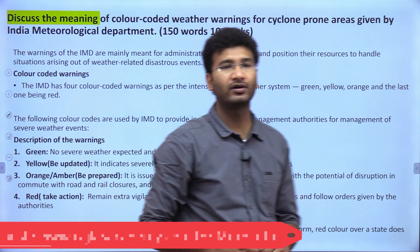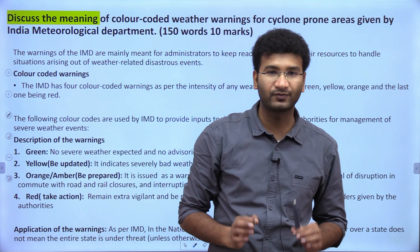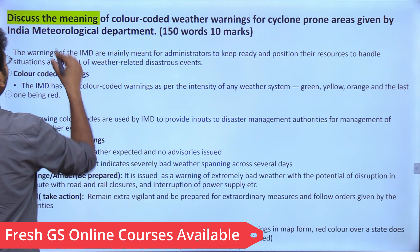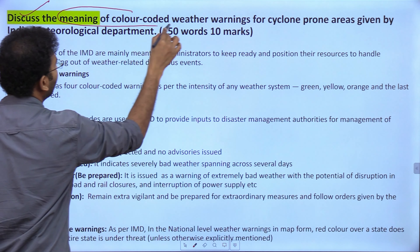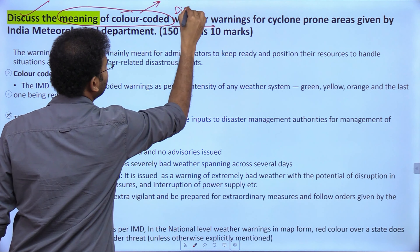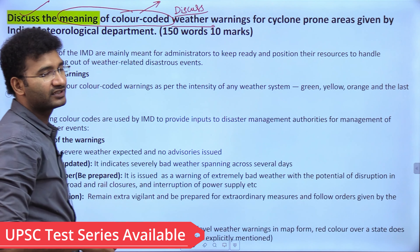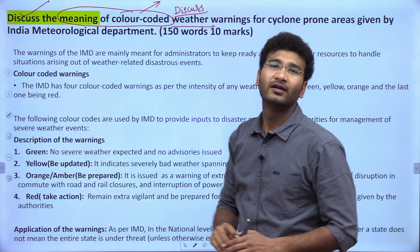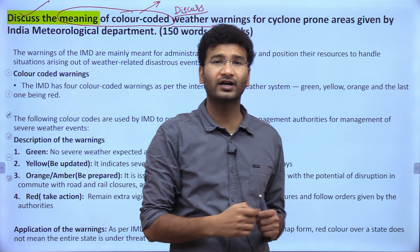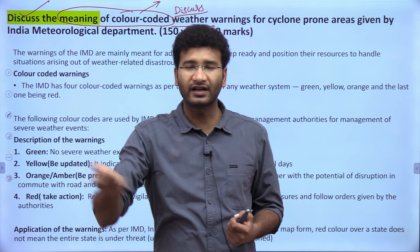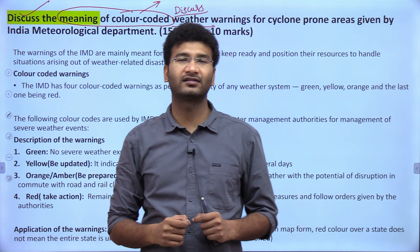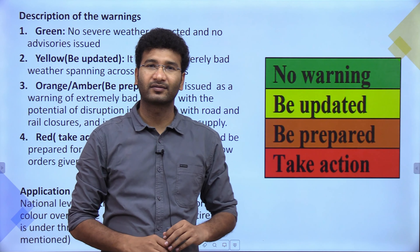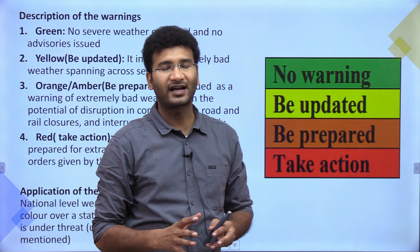The next question asks: 'Discuss the meaning of the color-coded weather warnings for cyclone-prone areas given by the Indian Meteorological Department.' The directive is 'discuss,' so we have to discuss in detail. Even aspirants who do not know the exact answer can derive it, because IMD has standardized color codings: green, yellow, orange, and red.